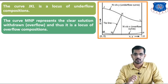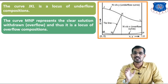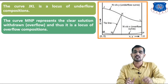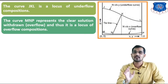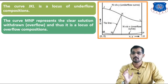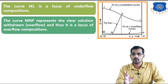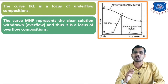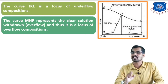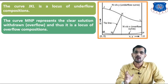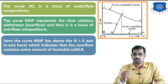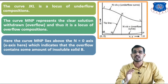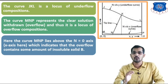The curve M and p represents the clear solution, which is your overflow stream. In this stream we get the solute which we want to remove from the solid using liquid — that is the clear solution or overflow stream. The curve M and p represents the clear solution withdrawn as overflow, and thus it is the locus of the overflow composition — the weight fraction of the solute in the overflow. The curve M and p lies above the N = 0 axis, which indicates that the overflow contains some amount of insoluble solid B.